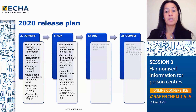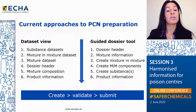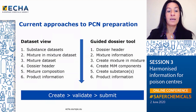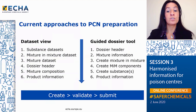There is a particular improvement I would like to bring to your attention, about how you can prepare your Poison Centers notification. When using the Euclid cloud services, you can approach the preparation of a Poison Centers notification via the dataset view or via the Guided Dossier tool. Building a Poison Centers notification in dataset view mode requires creating all the relevant substance datasets, creating any mixture-in-mixture datasets, and creating a mixture dataset which contains information about the dossier, about the mixture composition, and about the product.